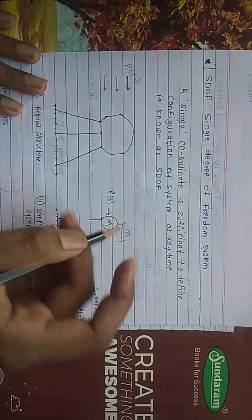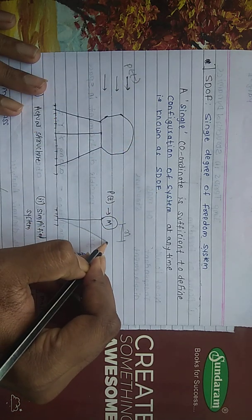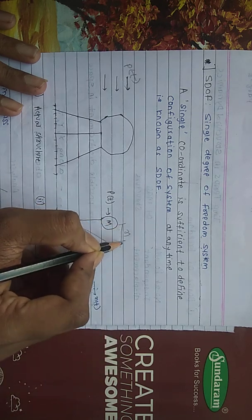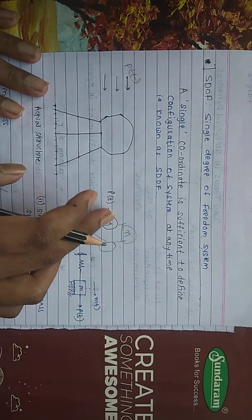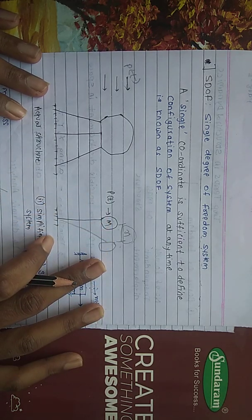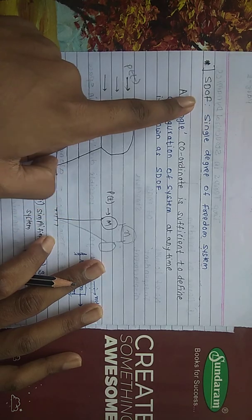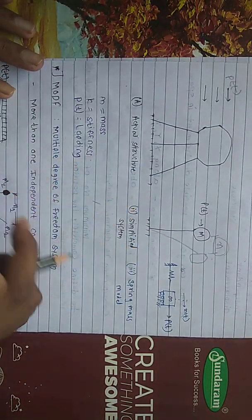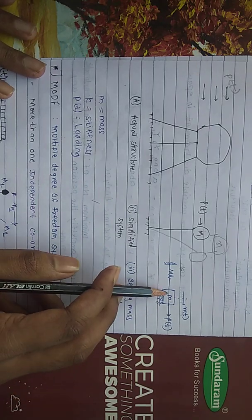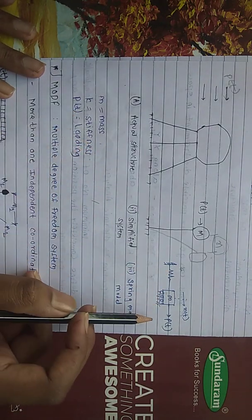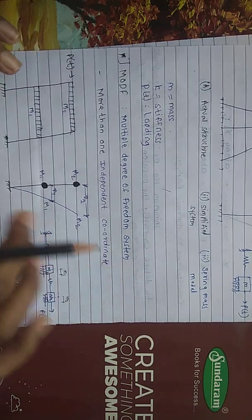Only one coordinate X is sufficient to locate the position of the structure after the lateral load is applied. That's why we call it a single degree of freedom system. Here M is the mass, K is the stiffness, and P(t) means loading.